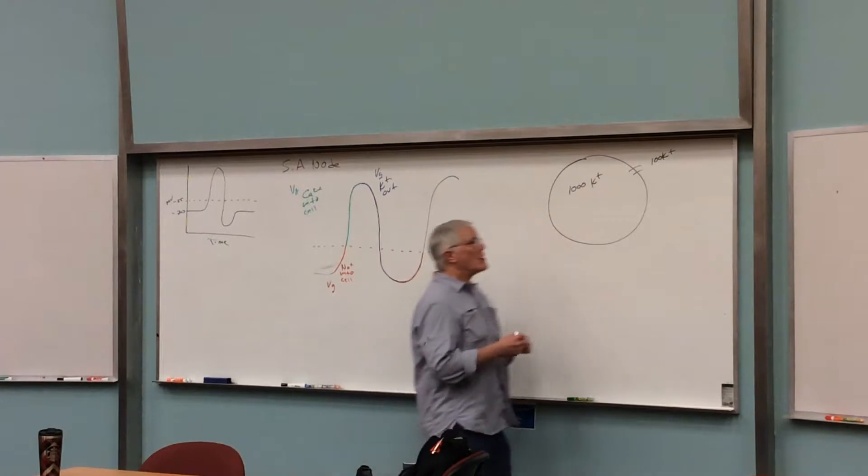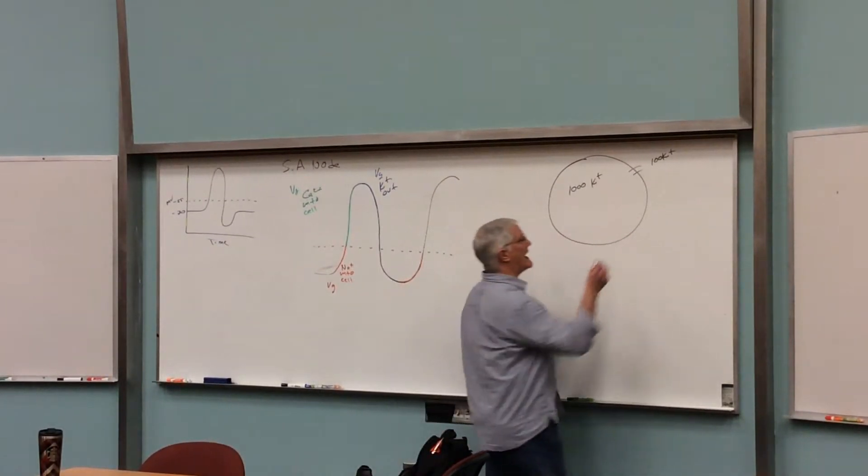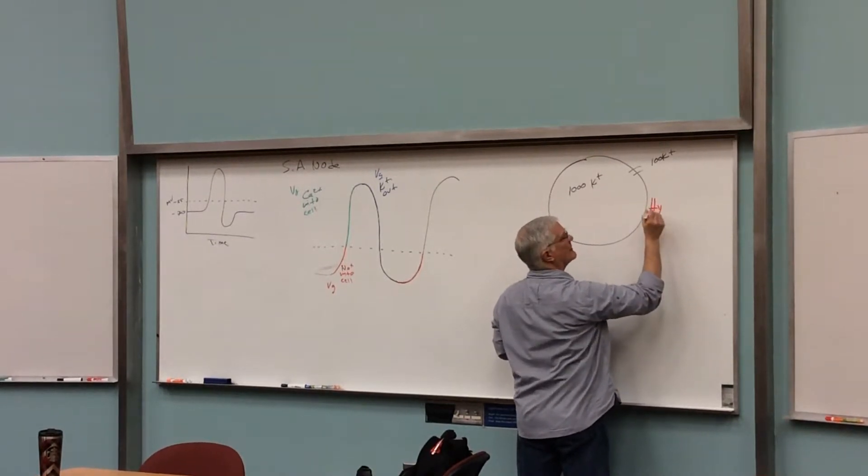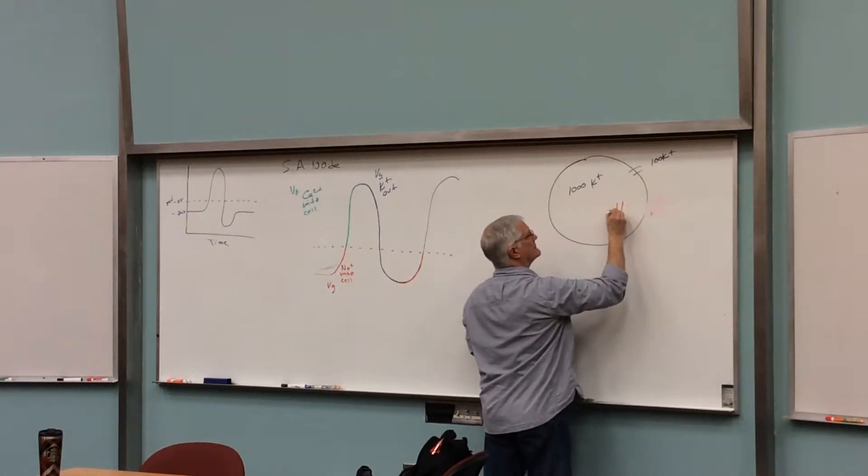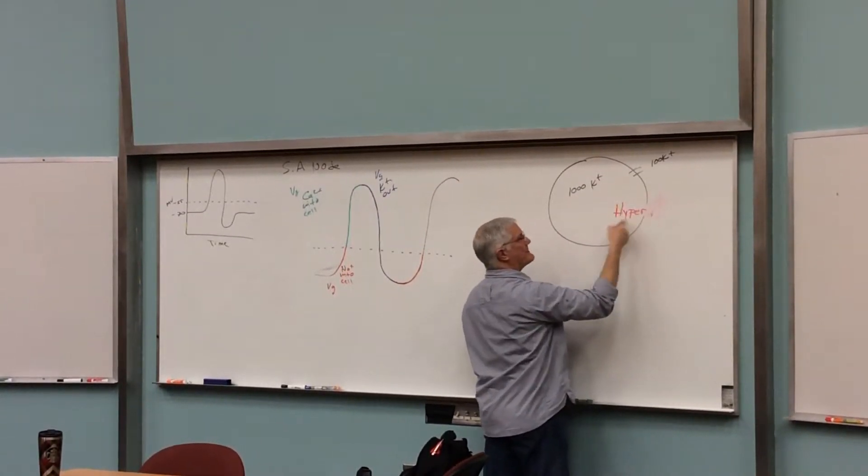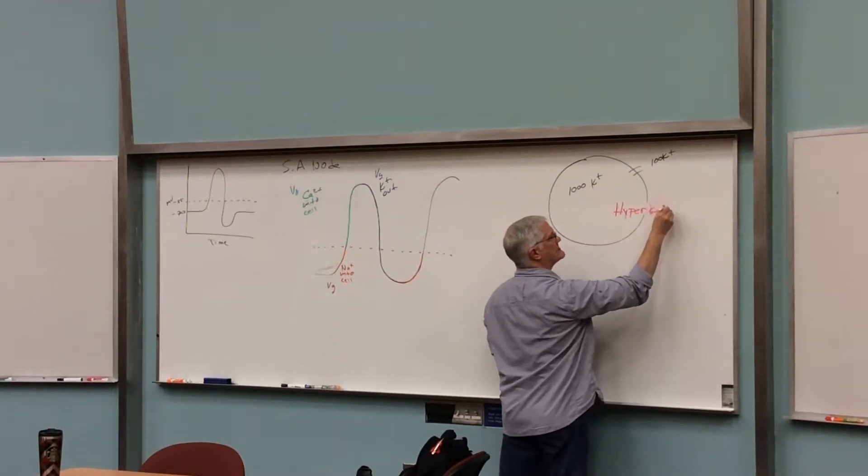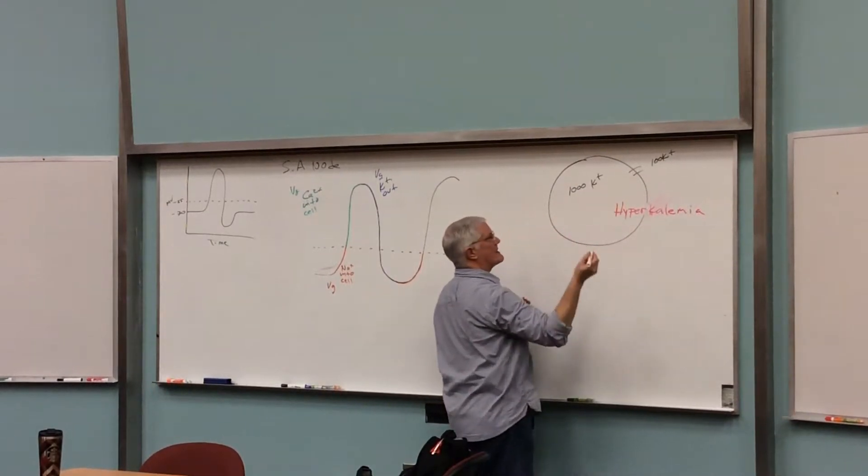This is what happens when you eat too much potassium. You get a condition called hyperkalemia. Hyperkalemia. I don't have enough room. I'm going to have to write it partially inside of my cell here.